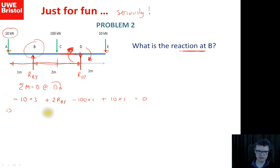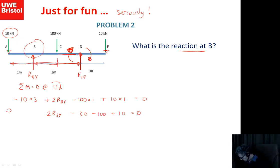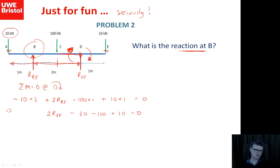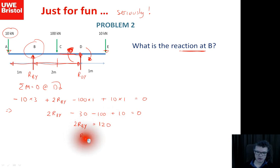Collecting terms: 2·R_BY minus 30 minus 100 plus 10 equals zero. So 2·R_BY = 120, therefore R_BY = 60 kilonewtons — confirming the symmetry result.